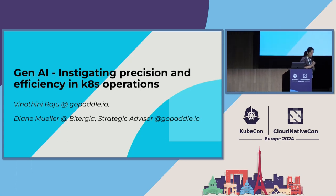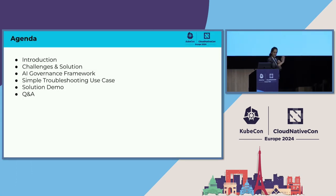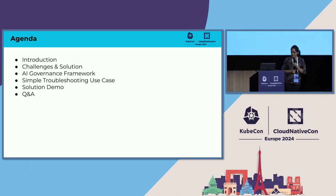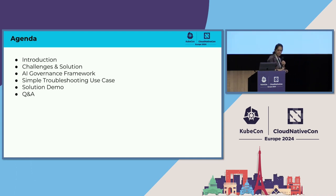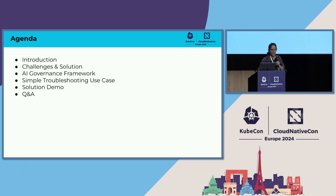I'm going to be talking about using Gen AI to instigate precision and efficiency in Kubernetes operations. That's a pretty loaded topic. So I've created a short agenda to give you a heads up on what I'll be covering over the next 20 minutes. I'll do a short introduction to the Kubernetes landscape and Gen AI, talk about some of the challenges and solutions available today, propose an AI governance framework for IT operations, walk you through a troubleshooting use case with a Kubernetes issue, show you a complete solution demo, followed by a quick Q&A.